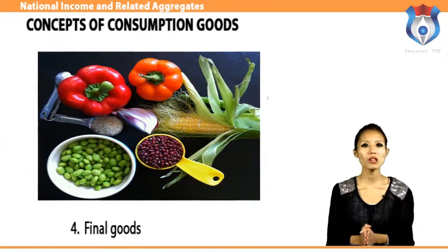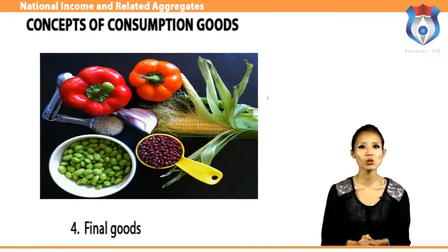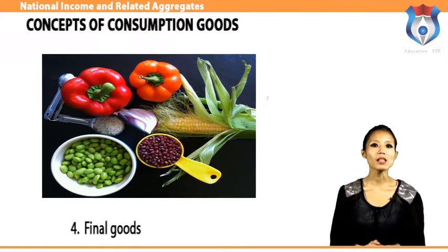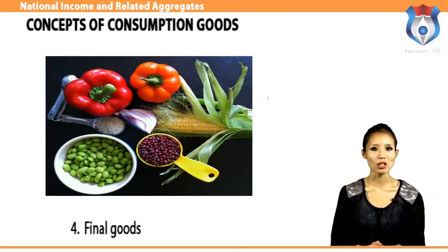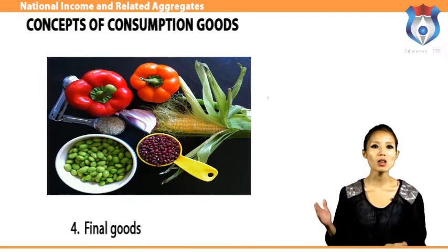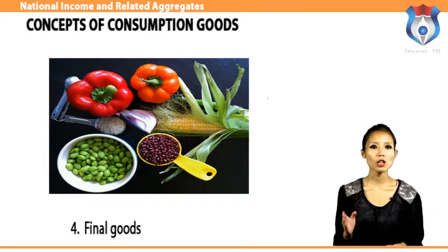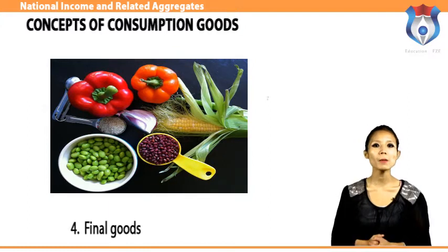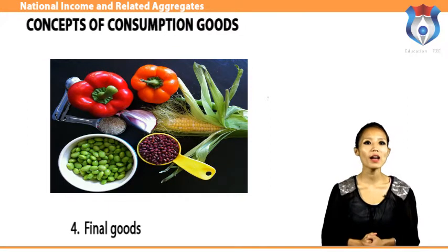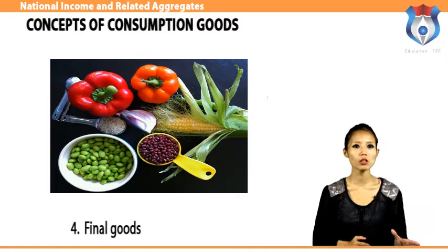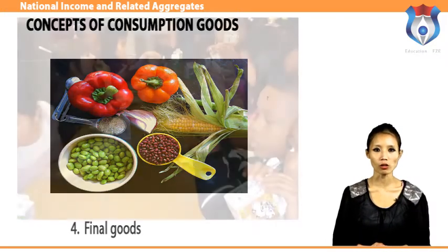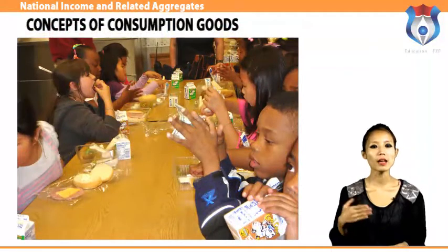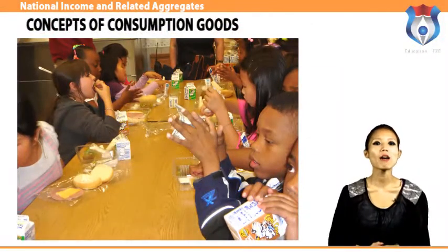The most prevalent type of final good is that purchased by the household sector to satisfy wants and needs — these are termed consumption goods, and expenditures on these goods are consumption expenditures. Humans are the ultimate users; these goods are not purchased as an input in the production of another good. Another important type of final goods involves investment expenditures on capital goods used as factors in the production of other goods, where the intended purpose is to produce other goods.